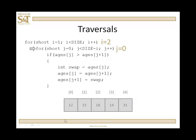I'm going to look at this data next, and then I'm going to look at these, and then I'm going to look at these, and then last but not least that. For i equal to two, again, j is zero. Is ages zero bigger than ages one? No. Move up. Is 15 bigger than 18? No. Move up. Is 18 bigger than 14? Yes, so I'm going to swap them.